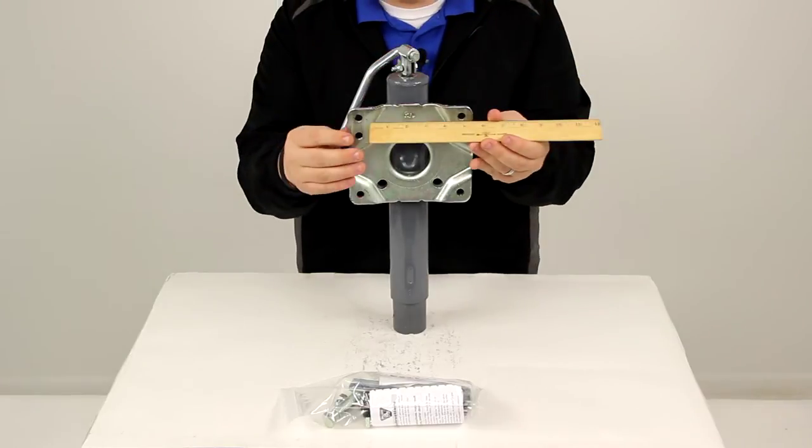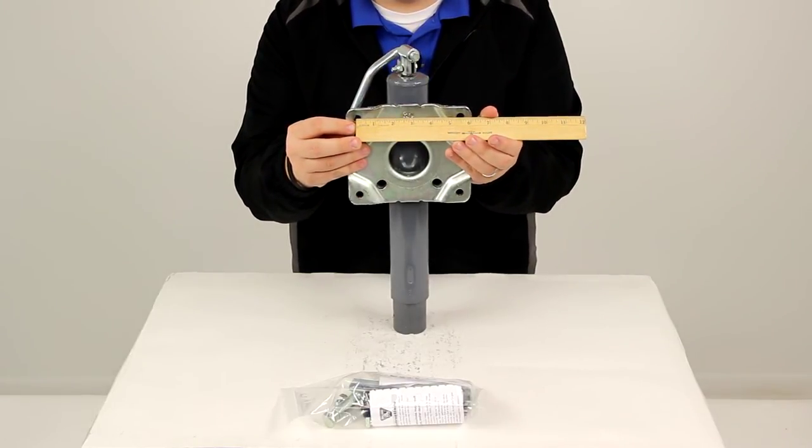The distance between the top two mounting holes, from the center of one to the center of the other, we have a measurement of 5 and 3 eighths of an inch.